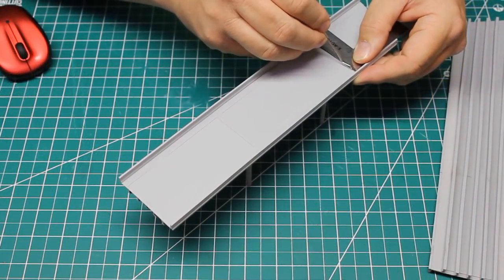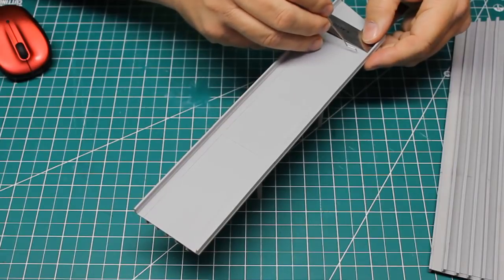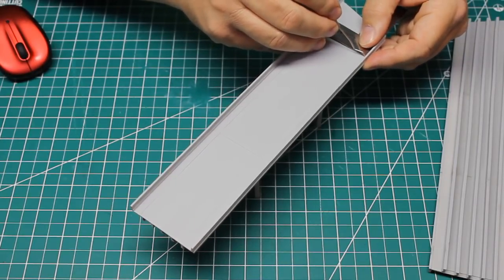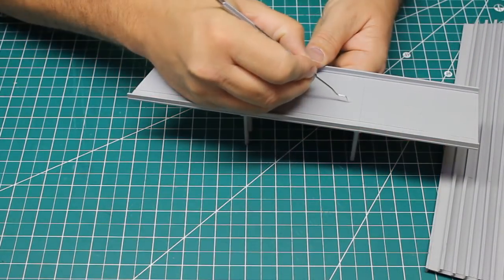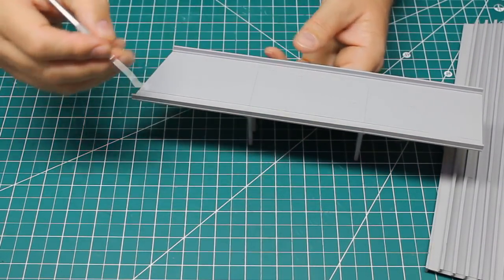I used a square and a fine dental pick to scribe the expansion joints that were on the kit's deck onto the styrene shoulders. I also used this fine dental pick to scribe some cracks in the pavement.